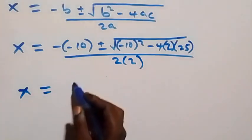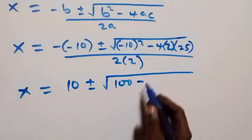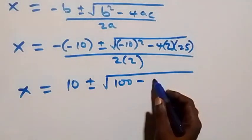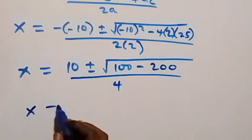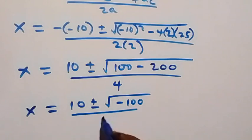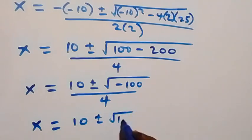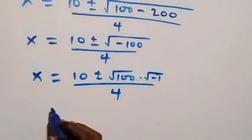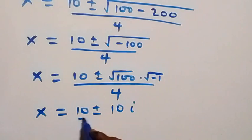This becomes x equals 10 plus or minus square root of 100 minus 200, over 4, which is x equals 10 plus or minus square root of minus 100, over 4. We can write this as x equals 10 plus or minus root of 100 times root of minus 1, which is i, over 4.